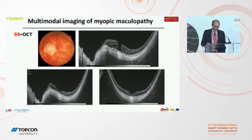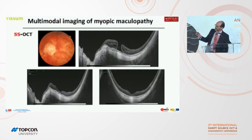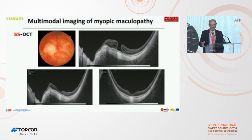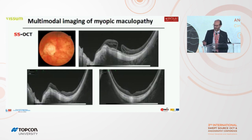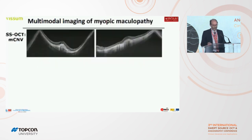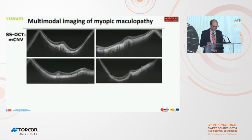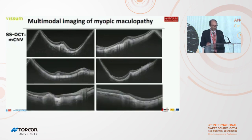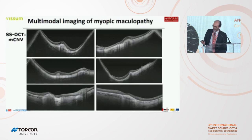We can see the evolution of cases. One question: can we obtain these images if we perform OCT with a contact lens? The image is more clear if we perform without a contact lens in these patients. We can study with OCT the evolution of myopic CNV — two cases of active myopic CNV, the second stage of the disease as a scar, and the third stage, atrophy, perfectly identified with swept-source OCT.